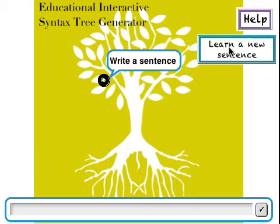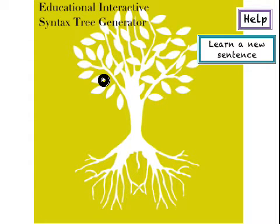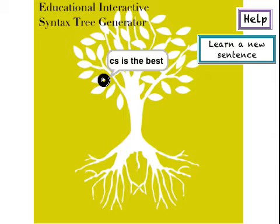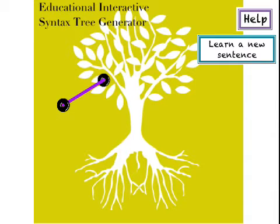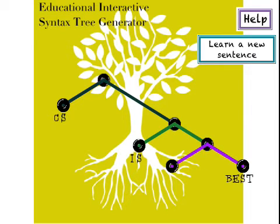Another great thing is that it has a learning mechanism so that it can acquire new words. For example, give me a word, Serena — it doesn't know what CS is, so it asks me, and CS is a noun. Voila! And it acquired a new word.